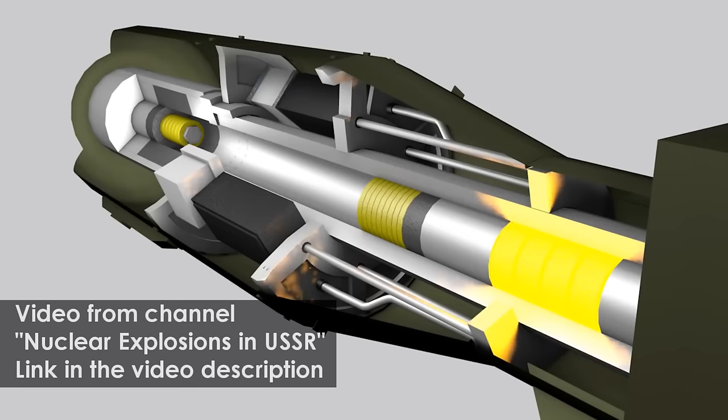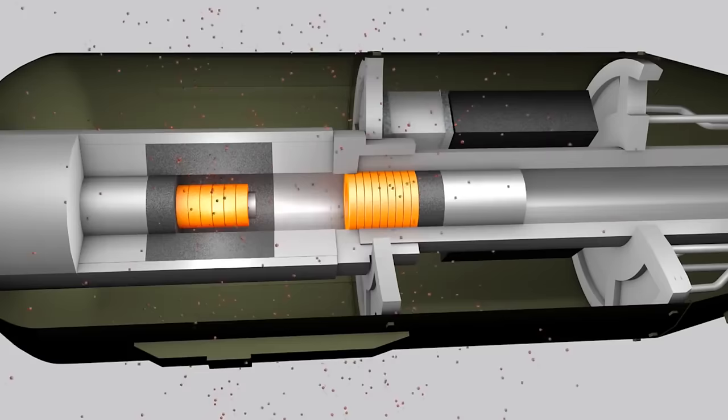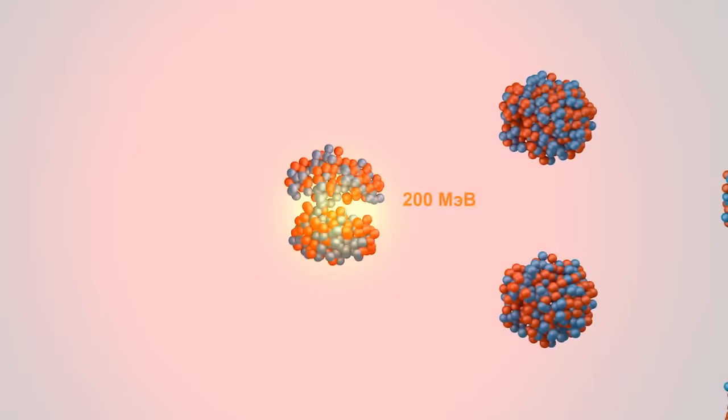This bomb was designed using gun method. Two parts of enriched uranium in sub-critical state were shot into each other. After being contacted, the mass of uranium would reach a critical point, and this would trigger a chain reaction,